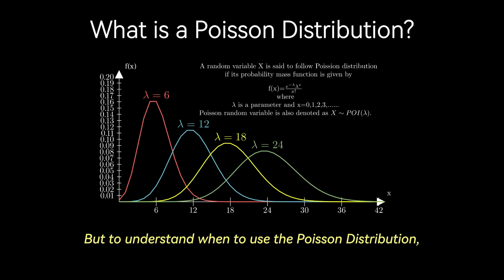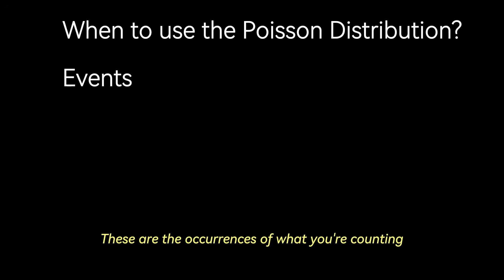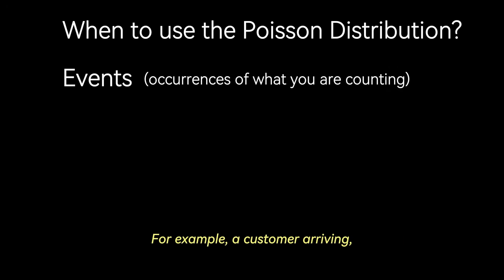You can think of it as the go-to tool for modeling the occurrence of relatively rare events over a specified duration or area. But to understand when to use the Poisson distribution, you have to consider a couple key components. First are events. These are the occurrences of what you're counting. For example, a customer arriving, a machine failing, or a typo on a page.